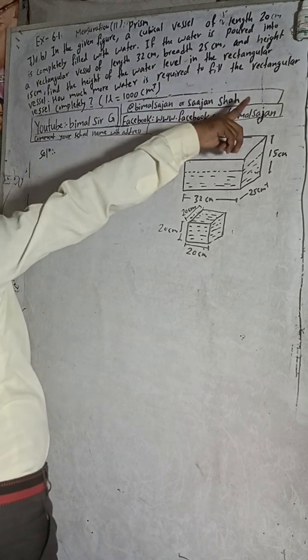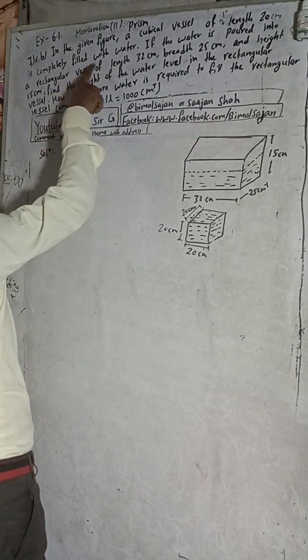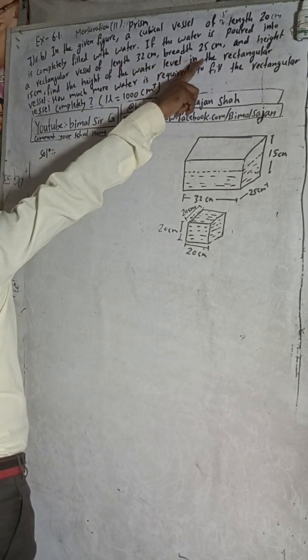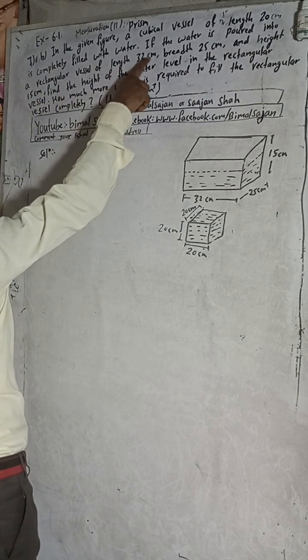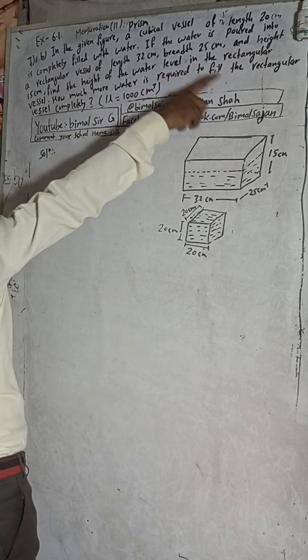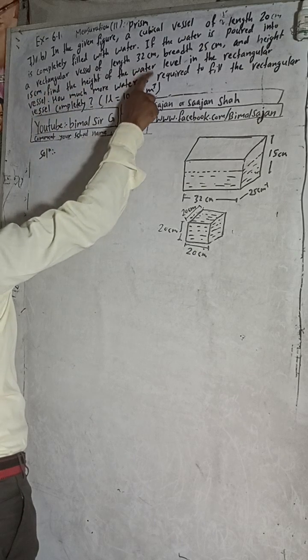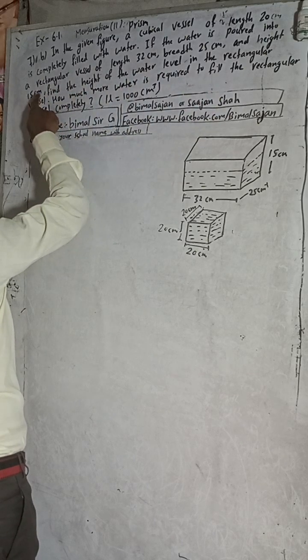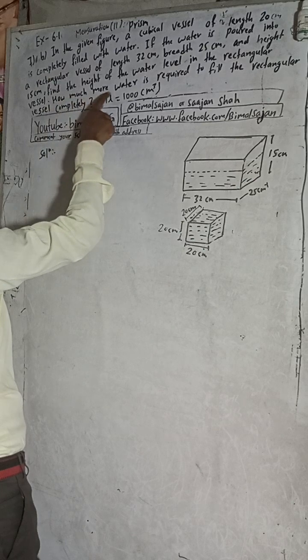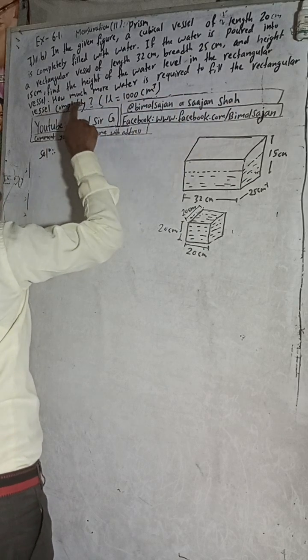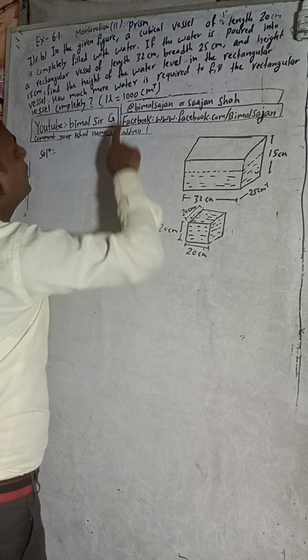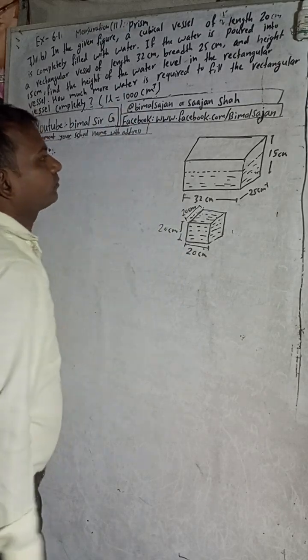So keep watching and keep supporting. Now let's start this solution. In the given figure, a cubical vessel of length 20 cm is completely filled with water. If the water is poured into a rectangular vessel of length 32 cm, breadth 25 cm, and height 15 cm, find the height of the water level in the rectangular vessel and how much more water is required to fill the rectangular vessel completely. One liter is equal to 1000 cm³.